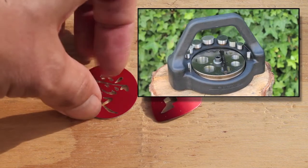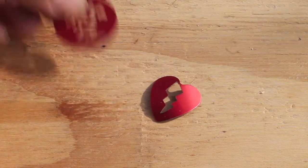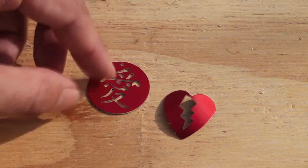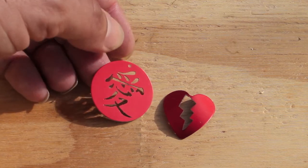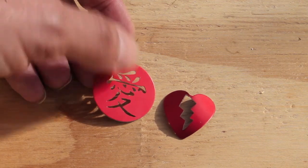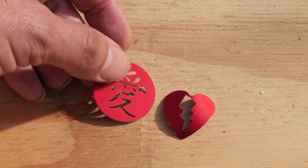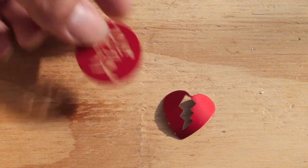That was cut out by a Durston disc cutter, by the way. If you wanted to dome this, I did make one of these and tried doming it and it just fell to bits. So if you do want to dome something, dome it first and then pierce it.